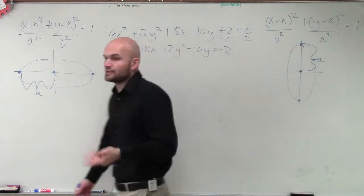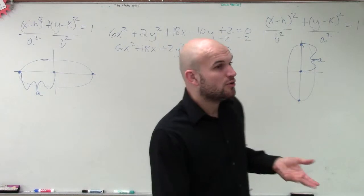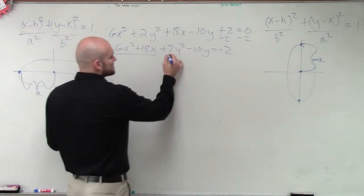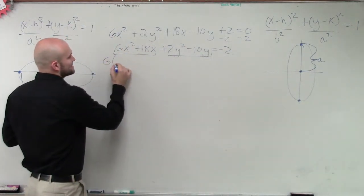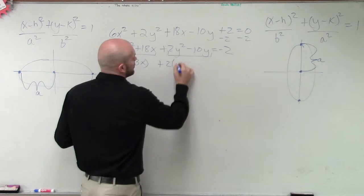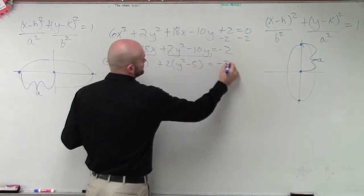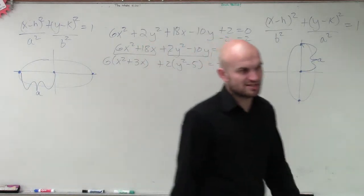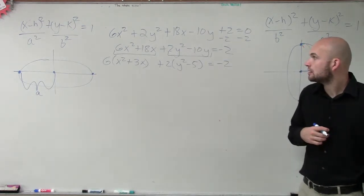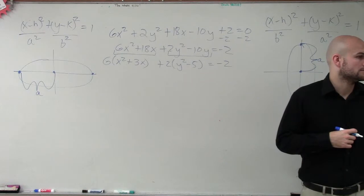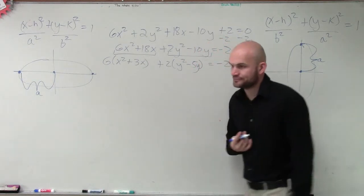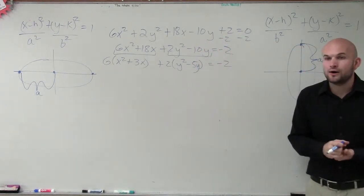Okay, so the first thing we're going to do — you guys remember, when completing the square we cannot have coefficients in front of our quadratic term. So the first thing we're going to do is factor out our coefficients. I'll factor out a 6 here, so I have x squared plus 3x, and factor out a 2, so I have y squared minus 5y. Now we need to complete the square to create that perfect square we can factor down.